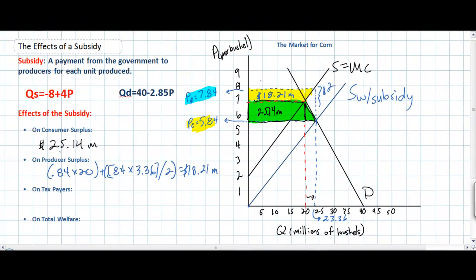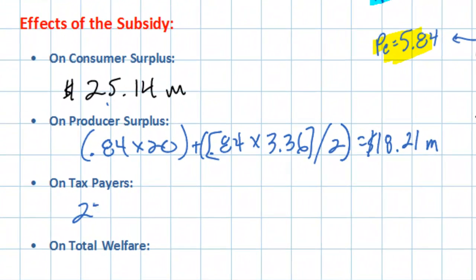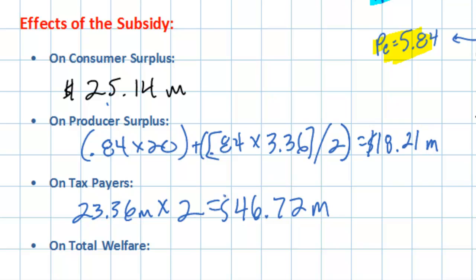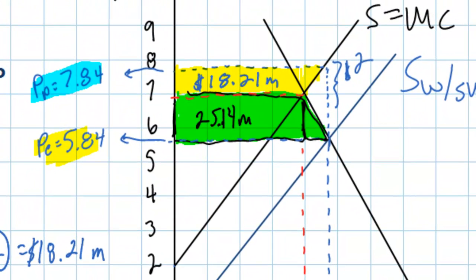The next calculation is to determine the total cost of this subsidy to taxpayers. This is simply the amount of corn produced — 23.36 million bushels — times the per unit subsidy of $2, giving us a total cost to taxpayers of $46.72 million. This is represented by the rectangle outlined in red on the graph.